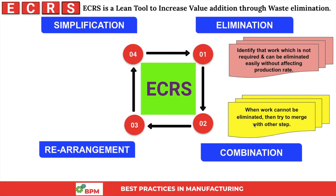When work cannot be eliminated, we move to Combination — try to merge it with other steps. If we can't eliminate that activity, we merge it with another activity so that our manufacturing flow will be balanced.